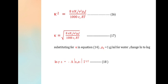κ = √[8πNA²e²ρ0I/(1000εRkT)]. Substitution for κ in equation 14, taking ρ as 1 gram per liter, changing ln to log.